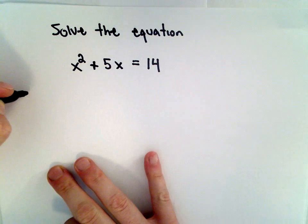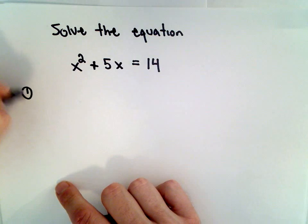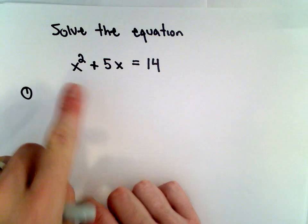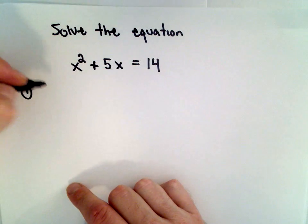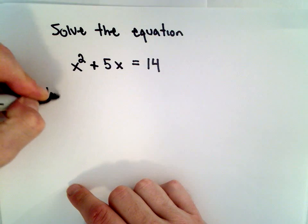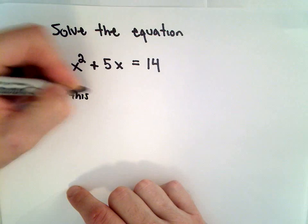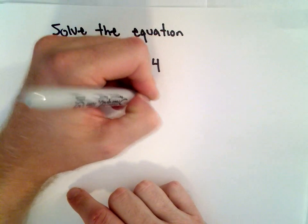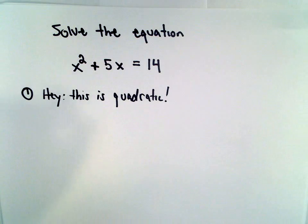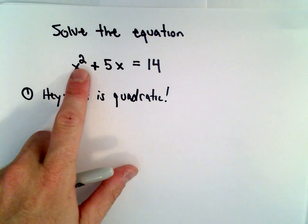So the first thing that I think of for this type of problem is, the first thing I want to do is, well, the first thing is I recognize it as being a quadratic equation. So I say, hey, this is quadratic. That's what's going on in my brain. And again, the way that I recognize it's quadratic is I see there's an x to a power of 2.